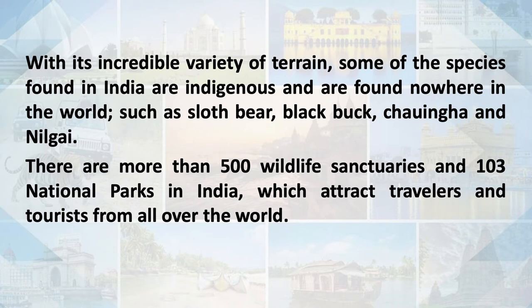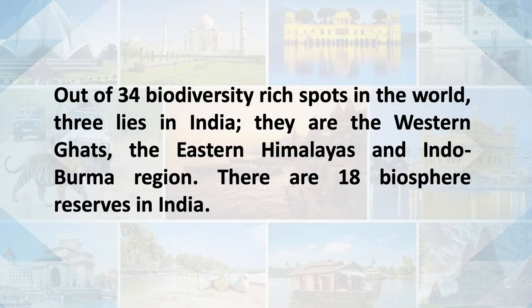With its incredible variety of terrains, some species found in India are endangered and found nowhere else in the world, such as the slot deer, black bucks, nilgai, and tiger — as tigers are only found in Asia and the largest population is in India. There are more than 500 wildlife sanctuaries and 103 national parks in India attracting tourists from all over the world. Out of 34 biodiversity hotspots in the world, three lie in India: the Western Ghats, the Eastern Himalayas, and the Indo-Burma region. There are also 18 biosphere reserves in India.